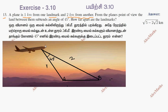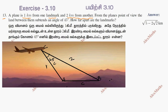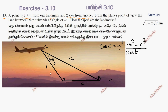So, angle C is 45 degrees. How far apart are the landmarks? We apply the cosine rule: c squared equals a squared plus b squared minus 2ab cosC.